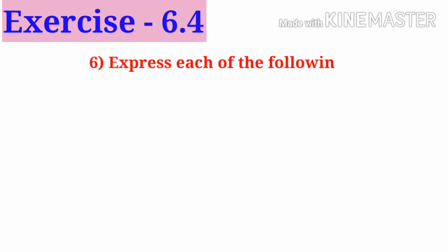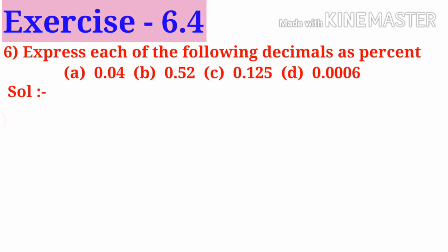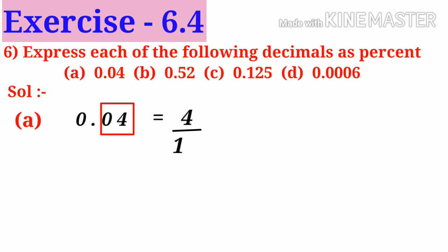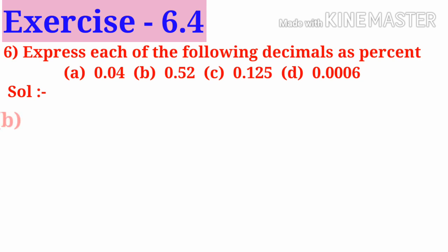Number 6: express each of the following decimals as percents. A: 0.04. Observe that there is one non-zero number, 4, so write it in the numerator. Also observe that there are two decimal places, so in the denominator add two zeros after 1, that is 4 by 100. Now it can be written as 4 into 1 by 100, and 1 by 100 is denoted by percent, so 4 percent.